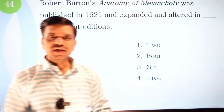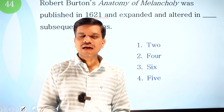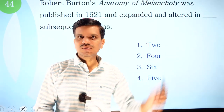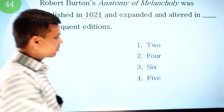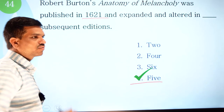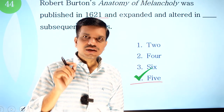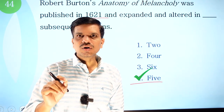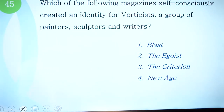Question 44: Robert Burton's Anatomy of Melancholy was published in 1621 and expanded and altered in how many subsequent editions? Options: two, four, six, or five. The correct option is five editions — published originally in 1621, then revised editions in 1624, 1628, 1632, 1634, and 1638.